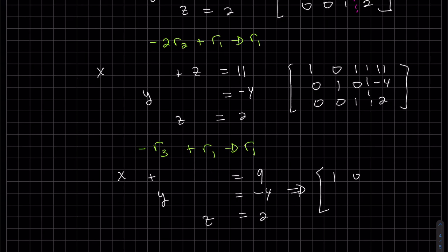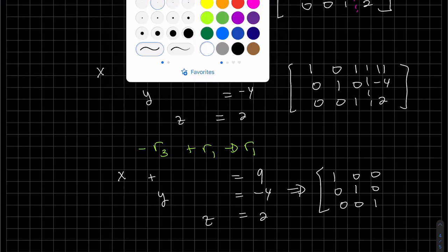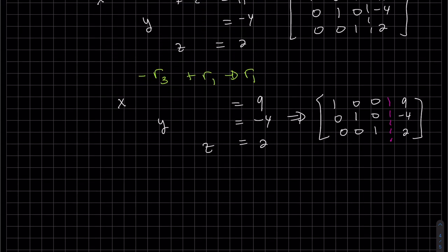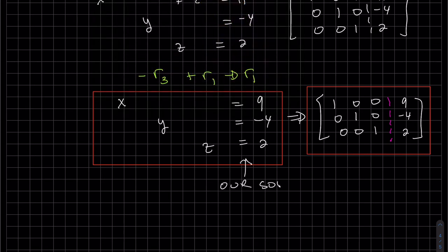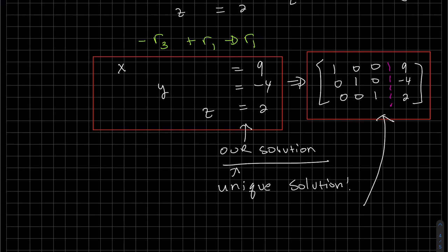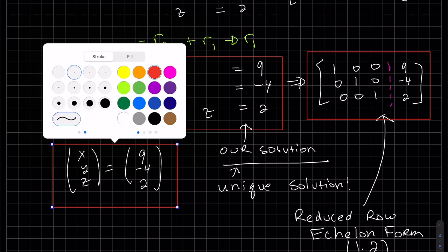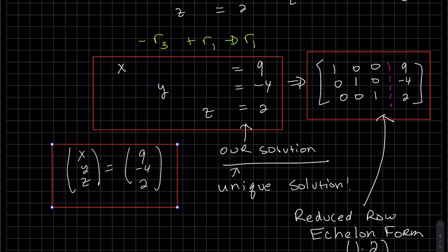So we get one, zero, zero. We can see here this is our solution that we had before, and it turns out this is the only solution to this system. This is the reduced row echelon form for the next section. Basically, you have this diagonal of ones and zero everywhere. When you have that, this is our solution for each. That's it for the first section. Thanks for watching.